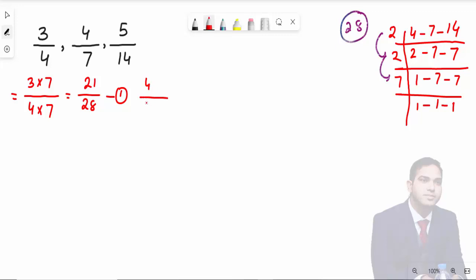Now, 4 over 7. Multiply the denominator 7 by 4 to make it 28. So 4 times 4 equals 16 over 28. That's fraction number 2. Now, 5 over 14. Multiply the denominator 14 by 2 to make it 28, so 5 times 2 equals 10 over 28. That's fraction number 3.